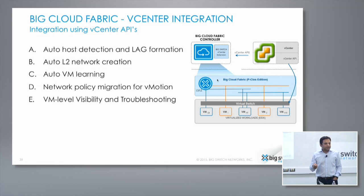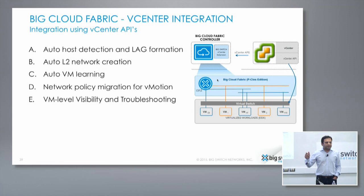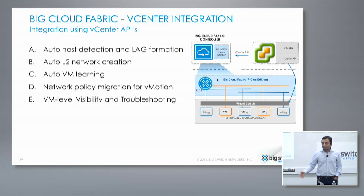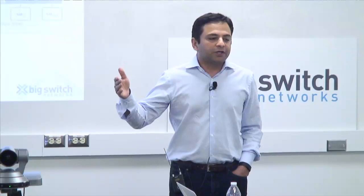As you deploy a VM on a particular port group or VLAN, we provision that VLAN on that top-of-rack switch. As you move the VM from one host to another — maybe from rack 1 to rack 16 — we dynamically change the network policy so that the new provisioning is on the top-of-rack switch on rack 16 instead of rack 1. And if there are no more VMs on that VLAN on rack 1, that provisioning will be removed from rack 1's top-of-rack switch.